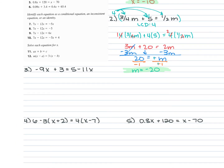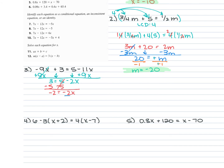For number 3, we're given negative 9X plus 3 is equal to 5 minus 11X. You have an X on both sides of that equation. To move the 9X over, we add 9X to both sides — we add it to the negative 11X as well. So this gives us 3 is equal to 5 minus 2X. Then we move the 5 over by subtracting. 3 minus 5 is negative 2, so negative 2 is equal to negative 2X. Divide each side by negative 2, and negative 2 divided by negative 2 is 1, so X is equal to 1.